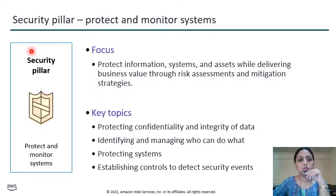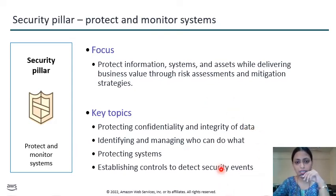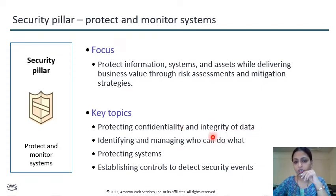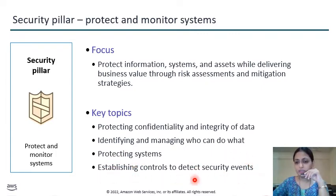The Security pillar is another pillar of the AWS Well-Architected Framework. Its main purpose is to protect and monitor systems. You need to provide confidentiality to your architecture and confidential protection to your data. For protection, you need to provide confidentiality as well as integrity to your data. You need to identify and manage what to do or not to do, protect your system, and establish controls for particular security events.